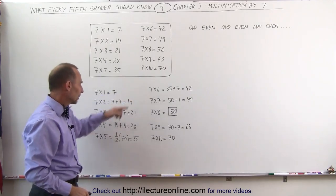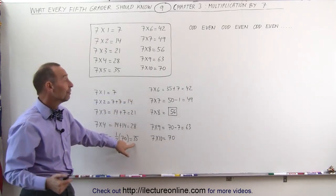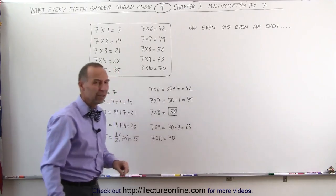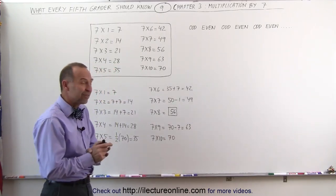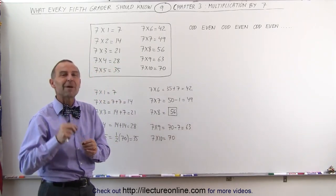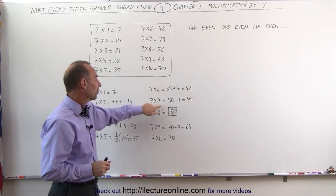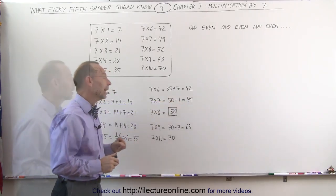7 times 6, we take the answer for the halfway point, 35, and add another 7 to it, and get 42. The way I used to remember 7 times 7, I knew that it was always 50 minus 1. 7 times 7 is 50 minus 1, which is 49.